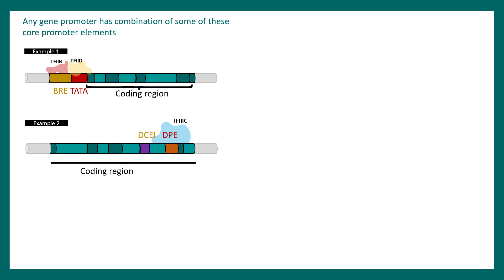To understand this with an example: in one case, TATA box and BRE may be together present in a promoter element. In another situation, DCE and DPE may be together. However, you won't find TATA box, BRE, DCE, and DPE all together in one gene's promoter — that's not possible.